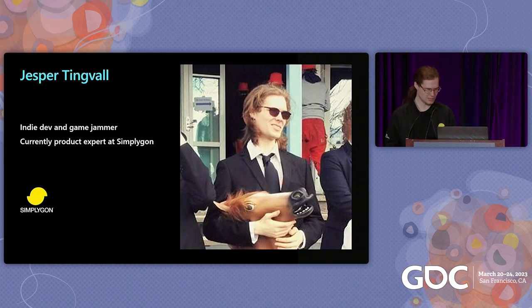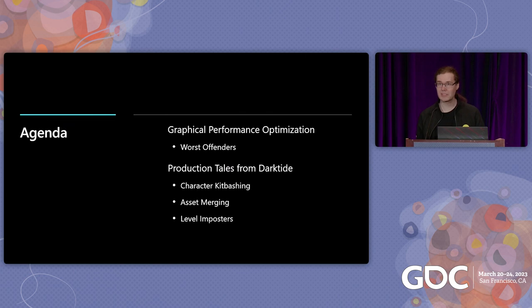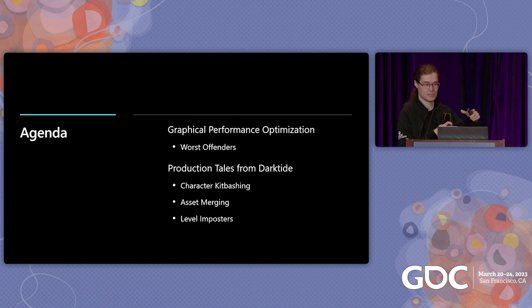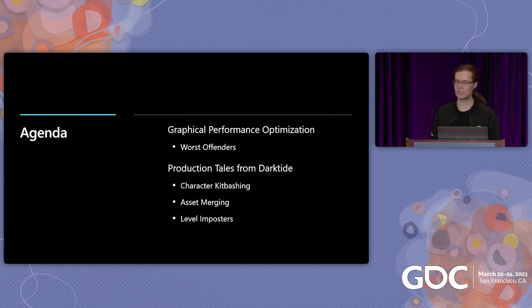So, asset optimization — that's exactly what we're going to talk about today. The agenda is: first, an asset optimization overview in general, looking at the worst offenders and how to solve them. Then we'll look at this from a game production point of view, covering Darktide and three challenges: character kit bashing, asset merging, and level imposters.